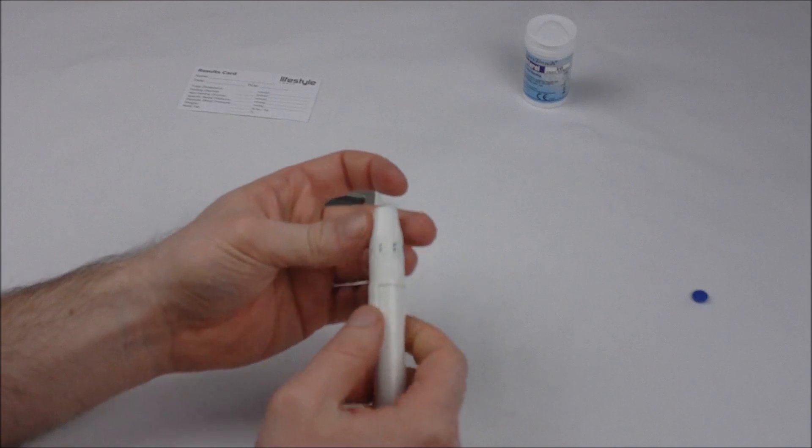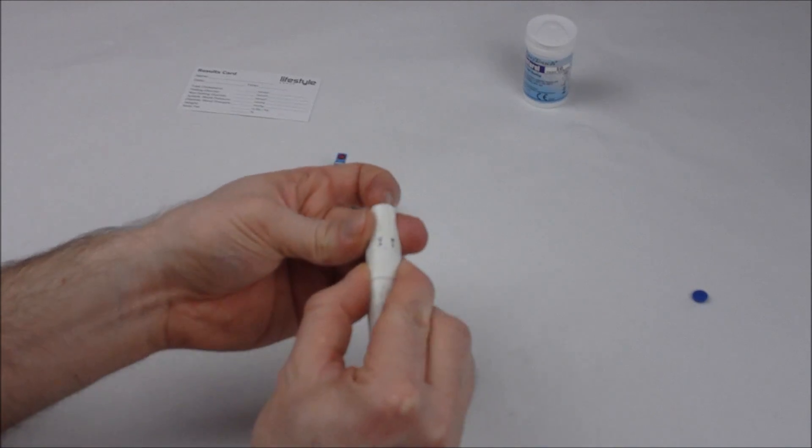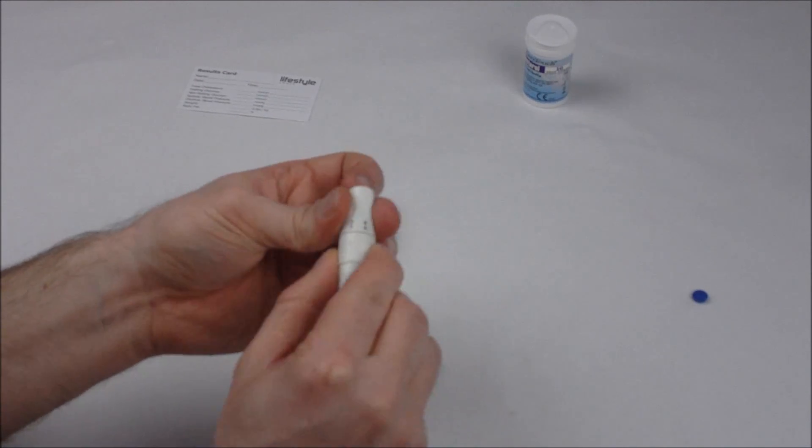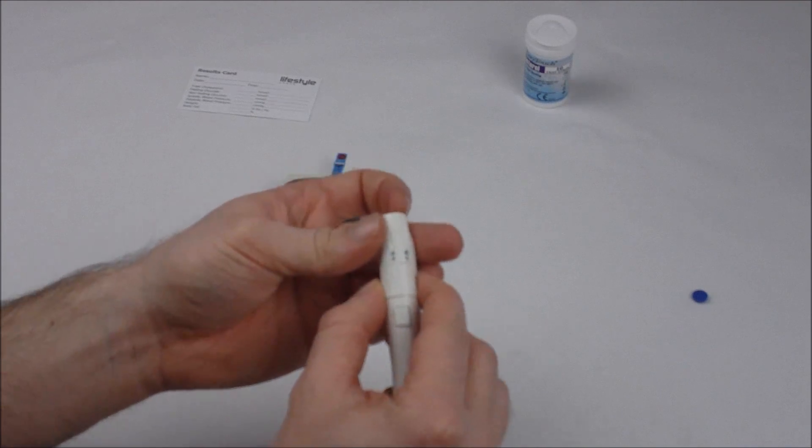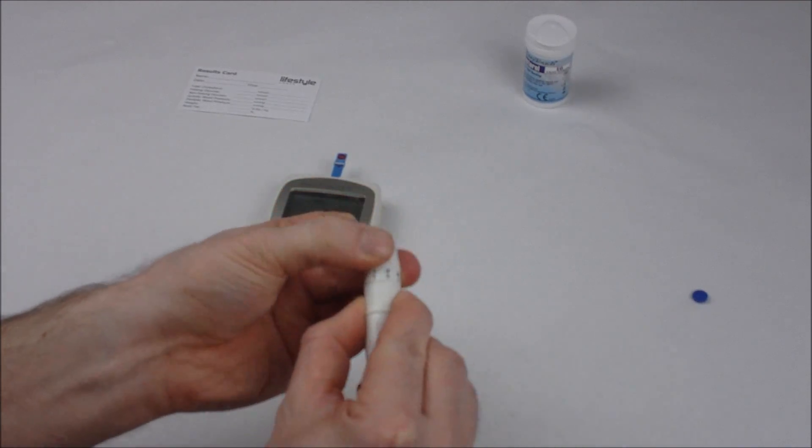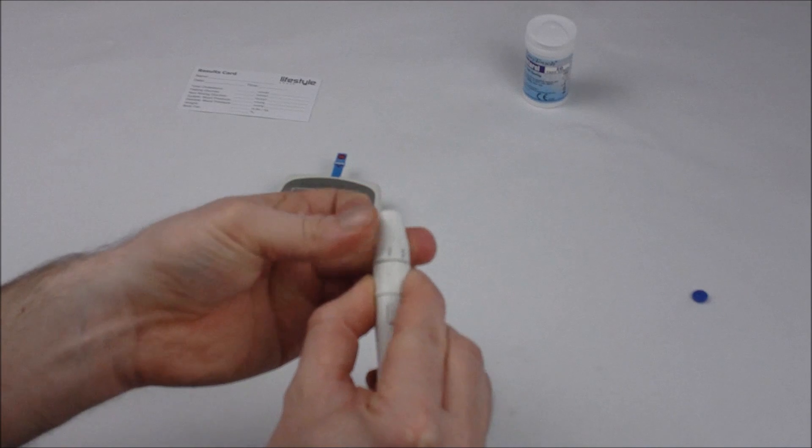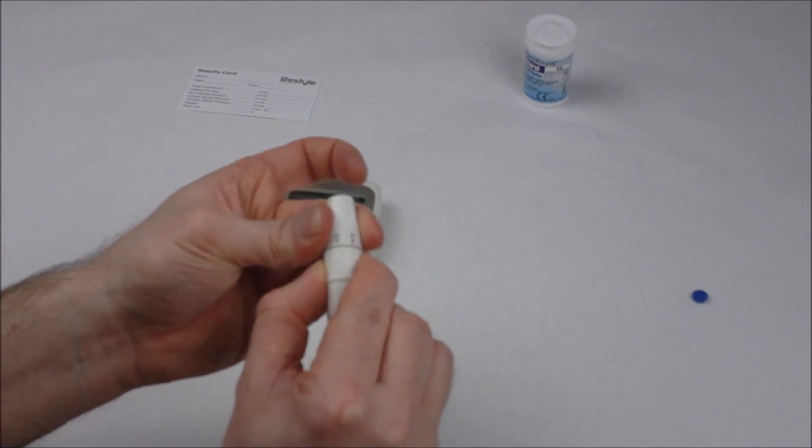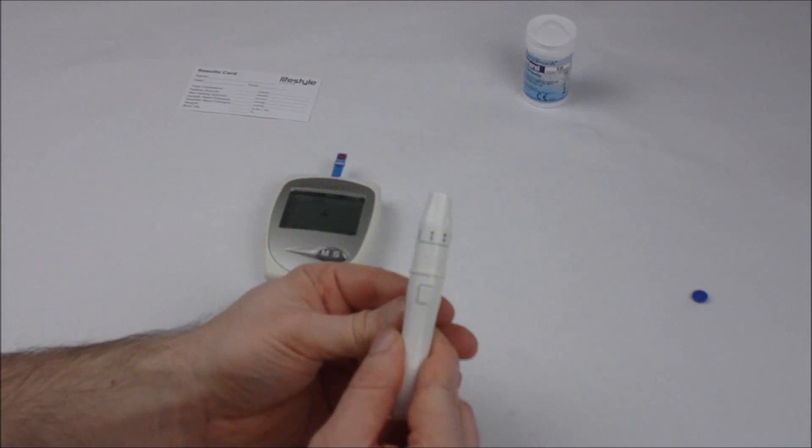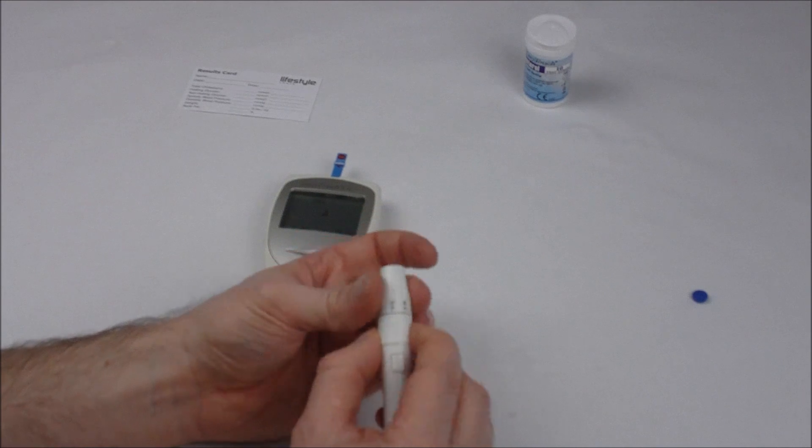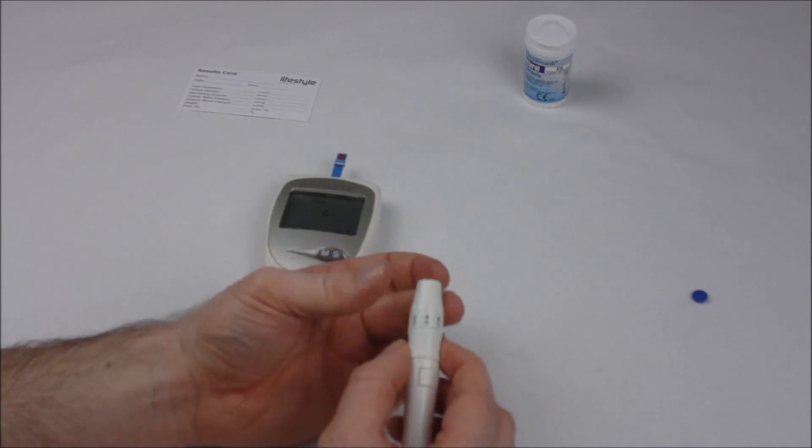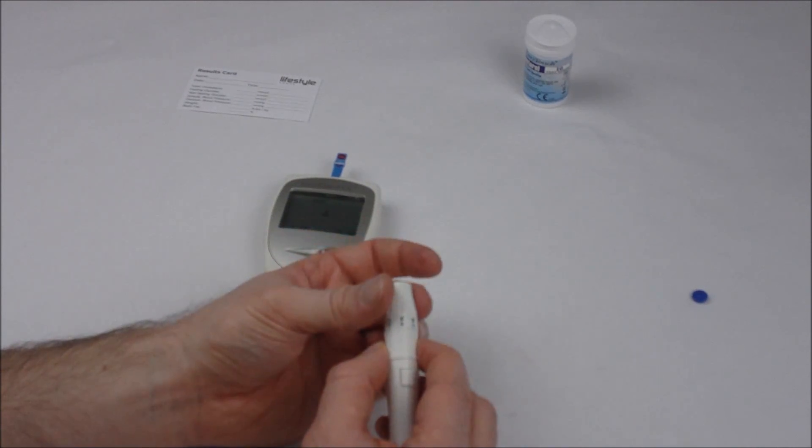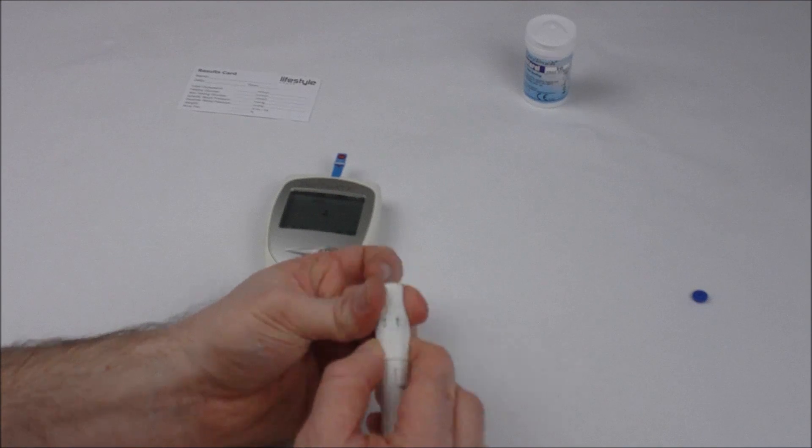Choose the depth setting that corresponds to your skin depth. Calloused fingers or thicker skin needs a four or five setting, thinner delicate fingers one or two. I recommend starting at three in the middle if you're unsure. For me I know that four is the best, and because I need a bigger blood sample I'm going to go to a setting of five.